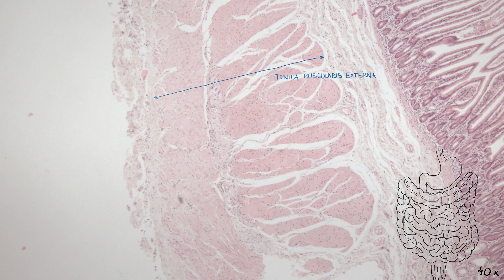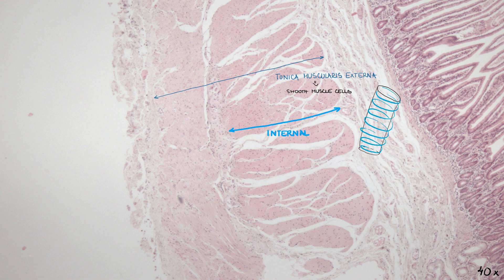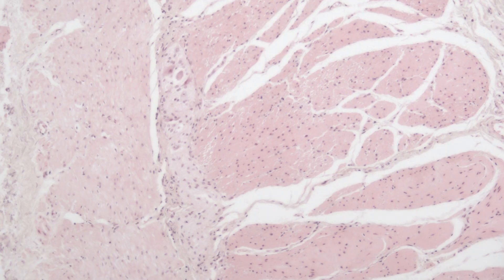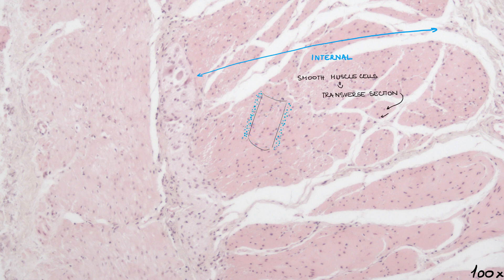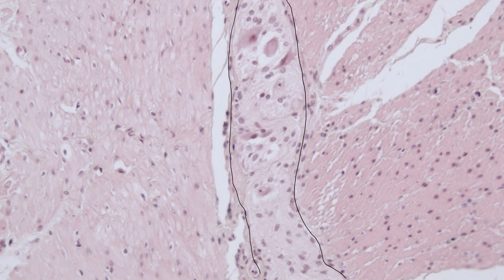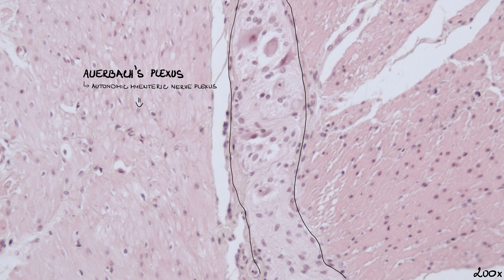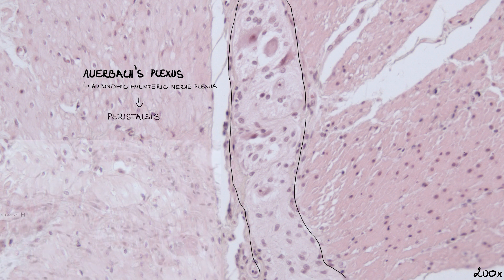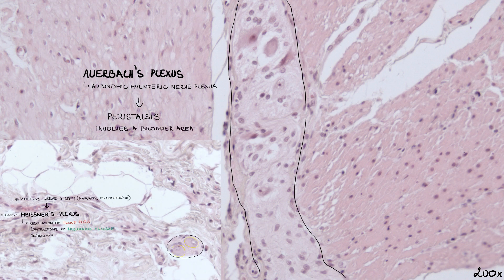The muscularis is composed of smooth muscle cells divided into two sub-layers. In the internal sub-layer, the orientation is circular, as opposed to the external sub-layer, which is mostly longitudinal. In this section, we can see that smooth muscle cells of the internal sub-layer are in transverse section, meaning the section was performed longitudinally. In the connective tissue between the muscle sub-layers, there is an autonomic myenteric nerve plexus, also called Auerbach's plexus. This plexus is responsible for peristalsis and, in contrast to Meissner's plexus, it involves a broader area of the intestine.